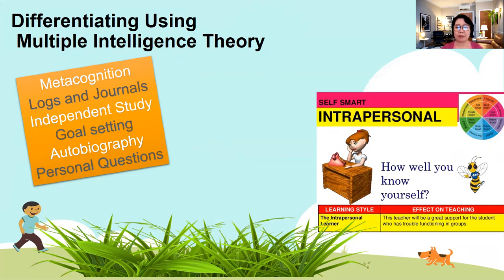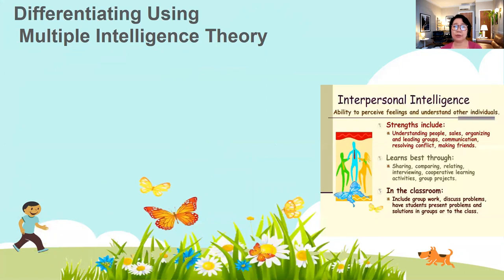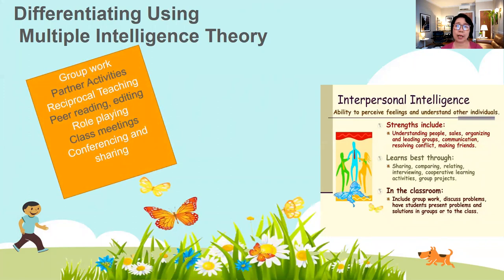The opposite is interpersonal intelligence — kids who love to be with a group and work with their peers. Activities for these students include group work, generating ideas together, partner activities, reciprocal teaching, peer reading, editing each other's work, role playing, class meetings, conferencing, and sharing. They love to interact and learn with their peers.